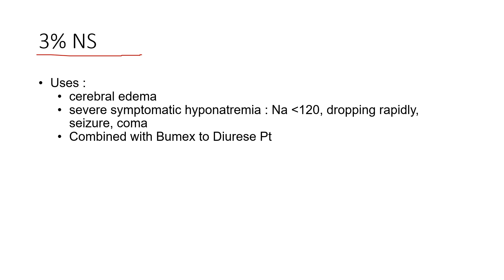3% NS is a hypertonic saline you'll see in the neuro ICU for patients with cerebral edema, and for severe symptomatic hyponatremia — a sodium of less than 120 that is either continuing to drop rapidly or has caused seizure or coma. That's what symptomatic means here. It's also commonly used in the cardiac ICU with Bumex, a diuretic, to draw fluid out of tissues in heart failure patients.